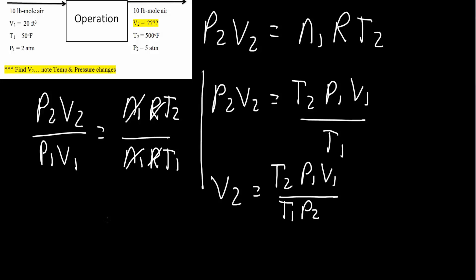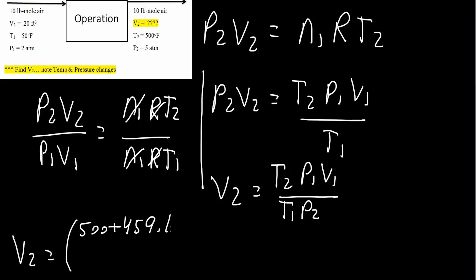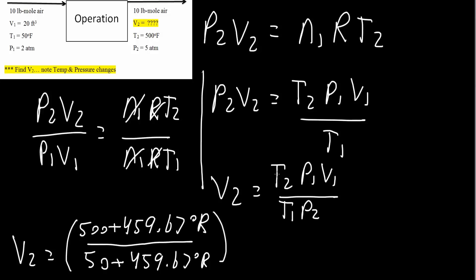Now we're close to solving V2. T2 is 500°F, but whenever we deal with these kinds of problems, we want to use an absolute scale. Since we have Fahrenheit, we convert to Rankine by adding 459.67. So T2 is 500 plus 459.67 Rankine, and T1 is 50 plus 459.67 Rankine.